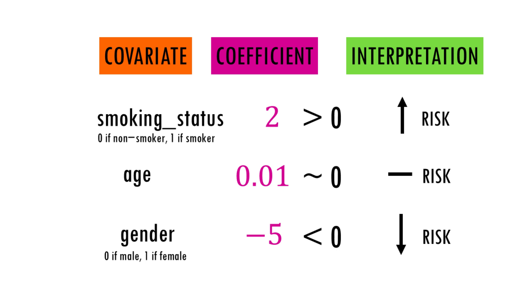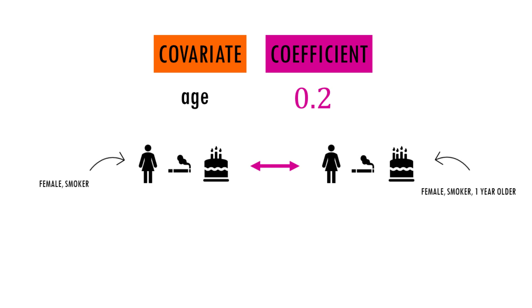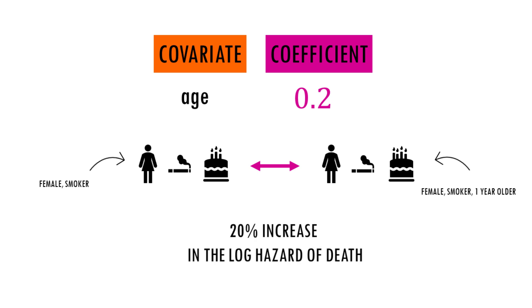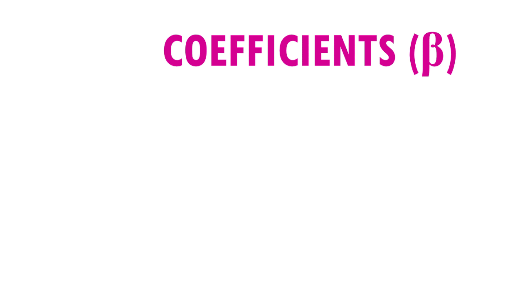So the variable has null or very little effect on the survival time. For example, if a covariate like age has a coefficient of 0.2, it means that a one-unit increase — being one year older — is associated with a 20% increase in the log hazard of the event. Coefficients are a bit difficult to interpret because they're in the log hazard scale.